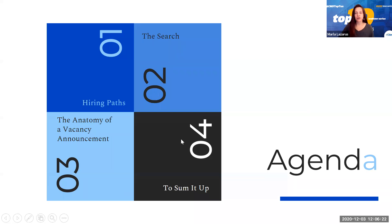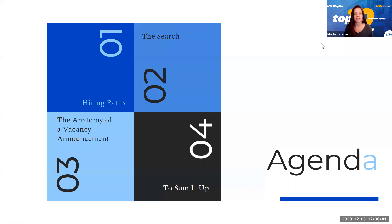We're going to be going over a few high points today of the USAJOBS application process. First, we're going to talk about some of the different hiring paths to get into the government in general. We're going to talk about the USAJOBS search itself. Then we're going to talk about the anatomy of a vacancy announcement, and then we're going to sum it all up at the end.